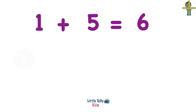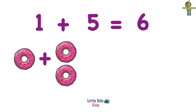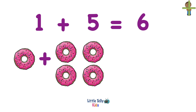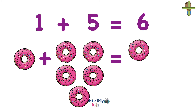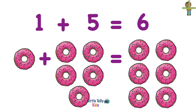Now, let's look at it once again. So, there is 1 donut. Now, 5 more donuts come in. Now, how many donuts are there? 1 donut and 5 donuts equals 6 donuts.